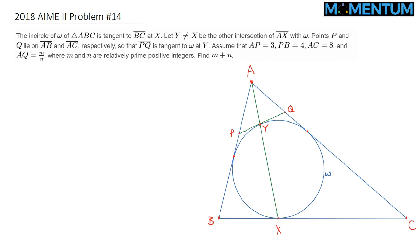I will further go ahead and label the other two tangent points as M and N. Let Y be the intersection of AX and the incircle again, as you can clearly see in this picture. We then draw the tangent at point Y to the incircle omega, and let it intersect sides AB and AC at points P and Q respectively.